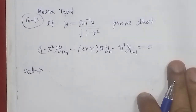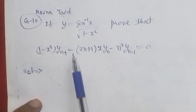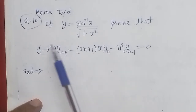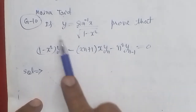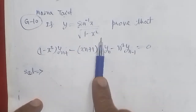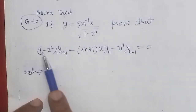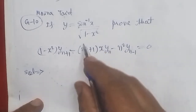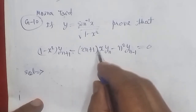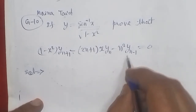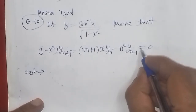Bismillahirrahmanirrahim. On the demand of students, this problem from differential calculus successive differences chapter is being solved. Leibniz theorem will be used. If y is equal to sin inverse x upon square root of 1 minus x square, prove that (1 minus x square) yₙ₊₁ minus (2n+1)x·yₙ minus n square times yₙ₋₁ is equal to 0.